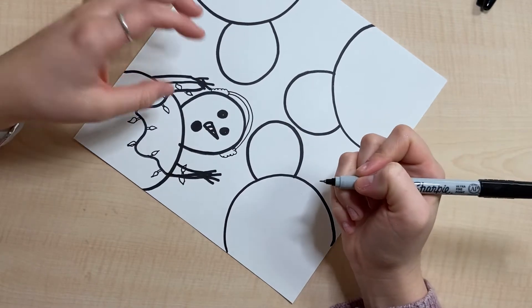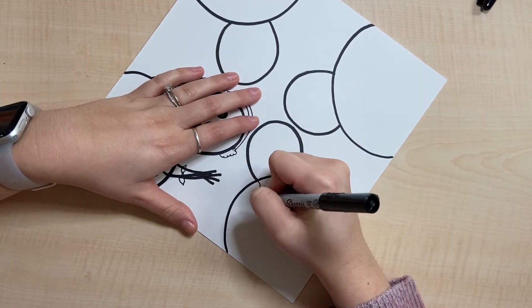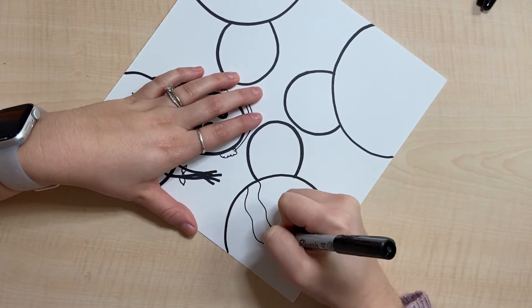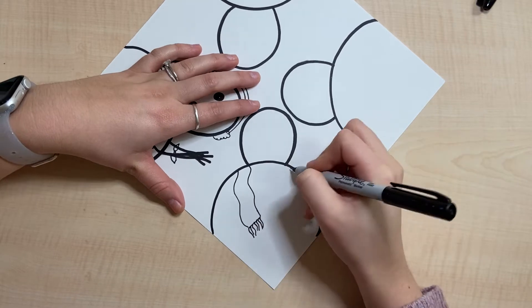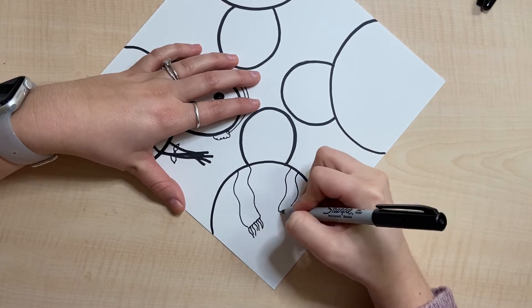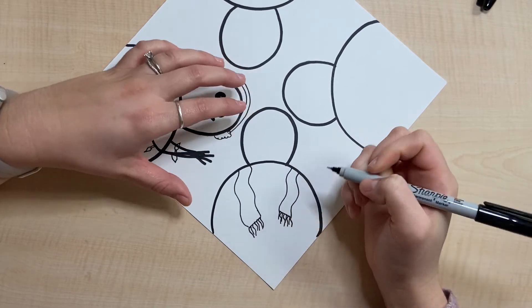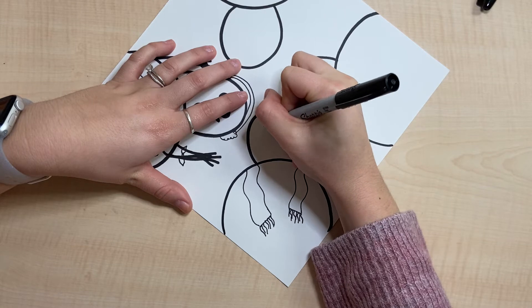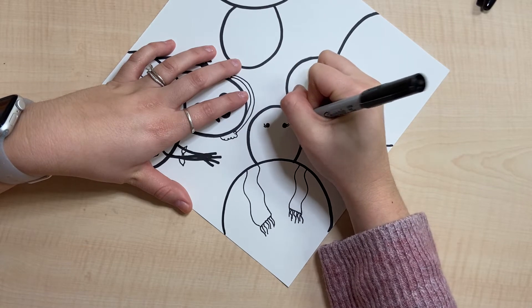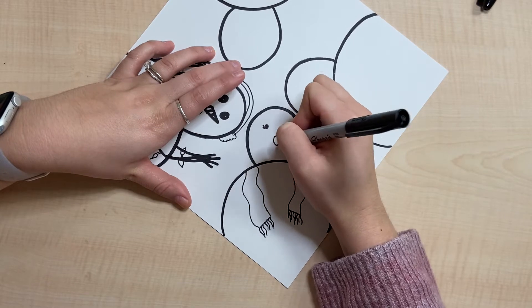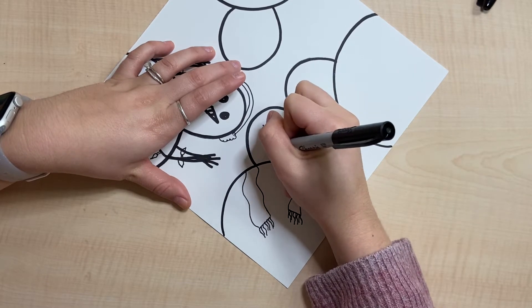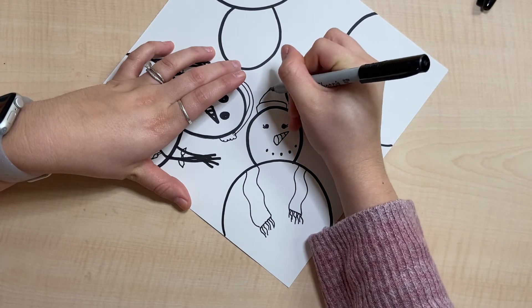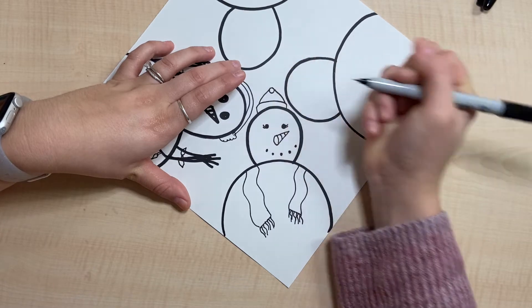Let's move on to another one. This one is going to have a scarf coming down from its shoulders. Some eyes and a little hat.